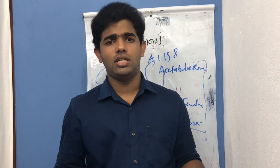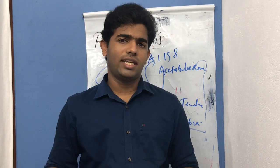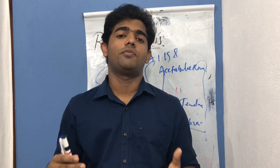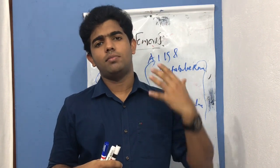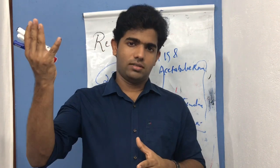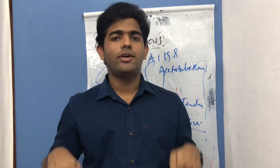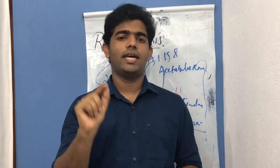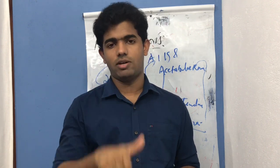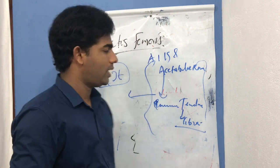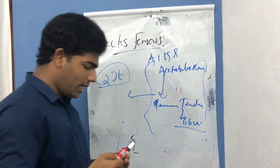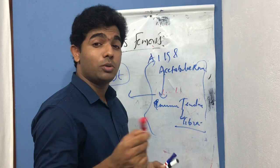The rectus femoris is an important primary hip flexor and a two-joint muscle. Its main disadvantage is inability to produce maximum force generation during simultaneous action at both the hip and knee joint. When the rectus femoris is weak, knee extension is compromised and the patient may buckle. At the hip, weakness may reduce hip flexion capability, but the iliacus and psoas will largely compensate — so weakness is most clinically significant at the knee joint.